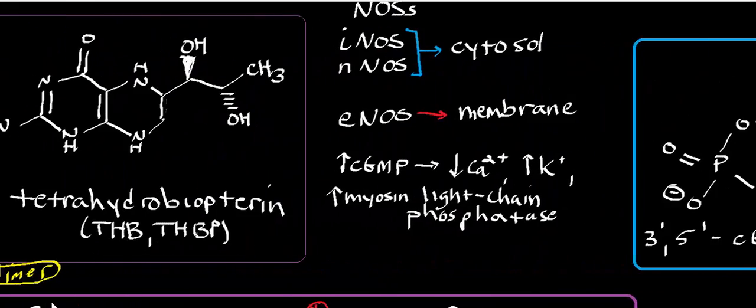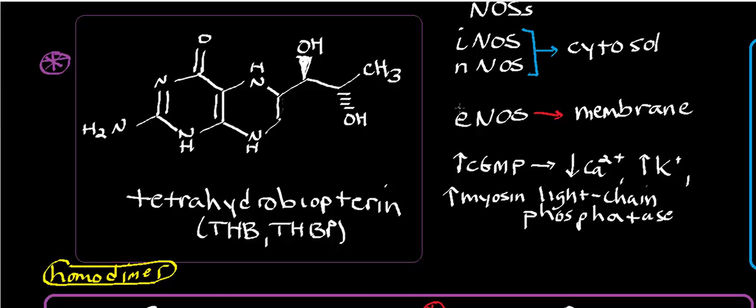There's one more type: endothelial nitric oxide synthase, made in endothelial cells that line your blood vessels. Scientists used to think that blood vessel lining cells were biologically inactive, but they're very, very active. One of the ways they keep blood flowing through veins and arteries is by secreting nitric oxide using endothelial nitric oxide synthase. The nitric oxide diffuses into the smooth muscle cells surrounding the blood vessel walls, ultimately causing them to relax.